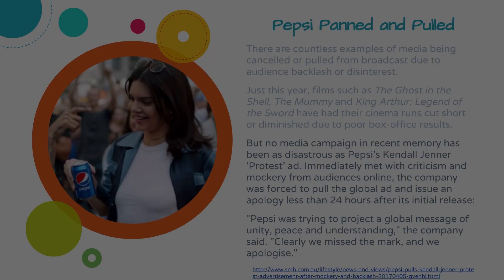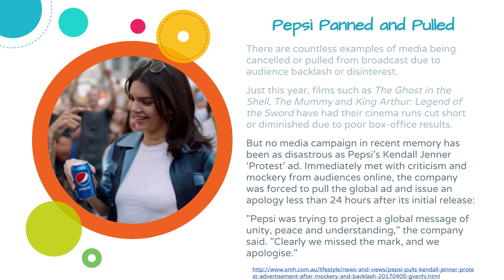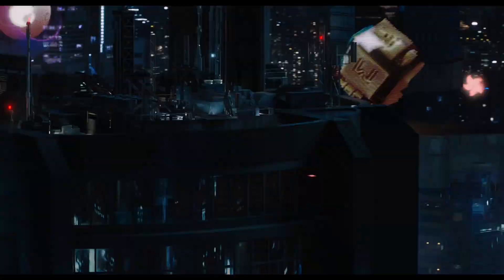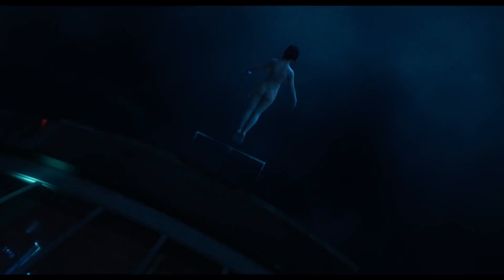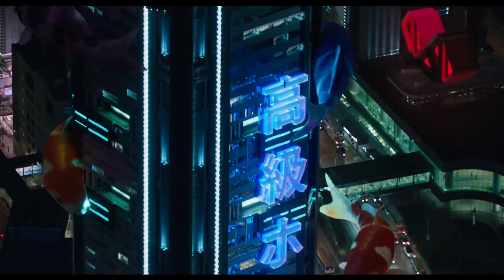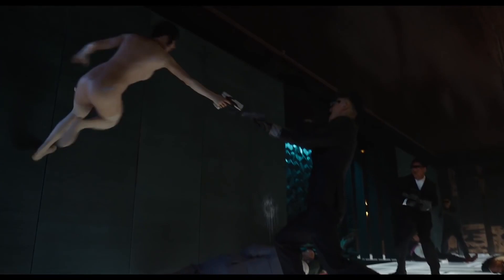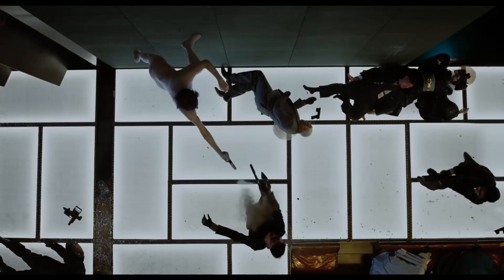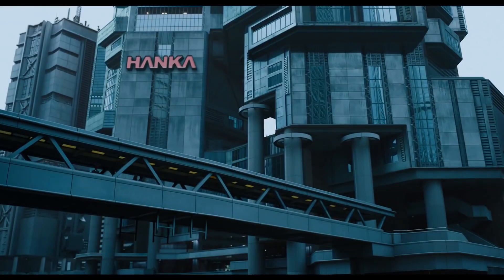Using quantitative data like Blumler, Katz and Gurevich did, we can think of examples where the audience forced a TV show or movie to stop being shown. There are countless examples of media being cancelled or pulled from broadcast due to audience backlash or disinterest. Films like Ghost in the Shell, King Arthur: Legend of the Sword, or Tom Cruise's The Mummy were all cut short in their box office runs because audiences weren't going to watch them.